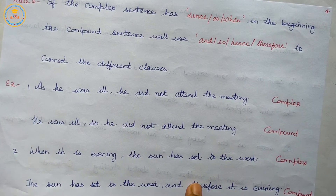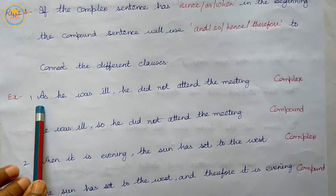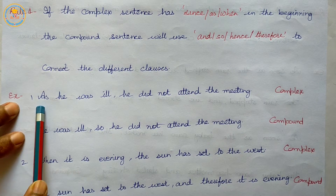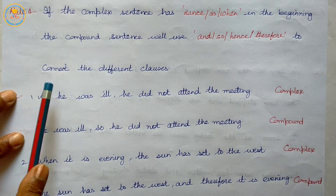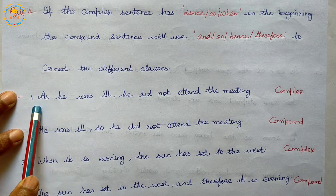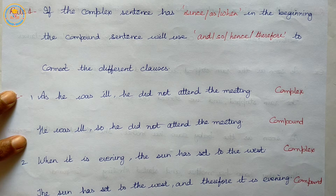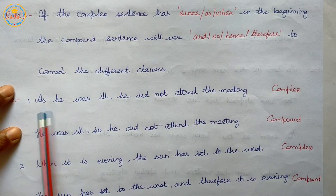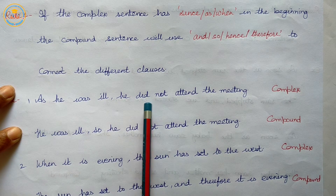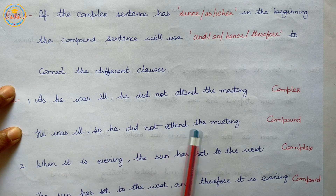Rule four: if the complex sentence has 'since', 'as', or 'when' in the beginning, the compound sentence will use 'and so', 'hence', or 'therefore' to connect the clauses. Example: 'As he was ill, he did not attend the meeting' becomes 'He was ill so he did not attend the meeting.'